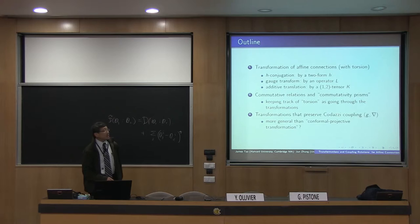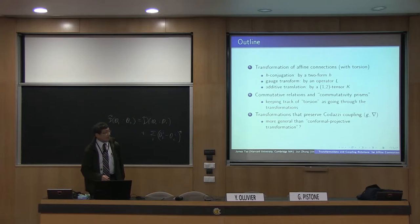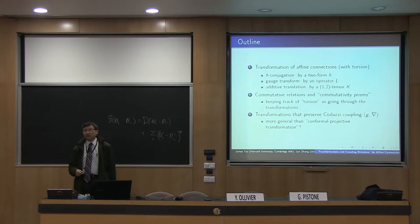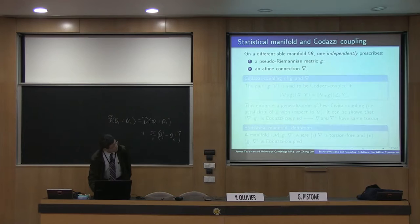The second part discusses commutative relationships among these various transformations on F-I connections, with the key being to keep track of the torsion throughout these operations. Thirdly, we discuss transformations that preserve the Kodazzi coupling between the F-I connection NABLA and G, the metric. The goal is to ask whether there are more general transformations of the F-I connection and the metric that preserve the Kodazzi coupling, more general than the known conformal projective transformation.